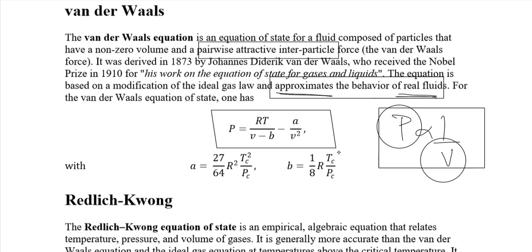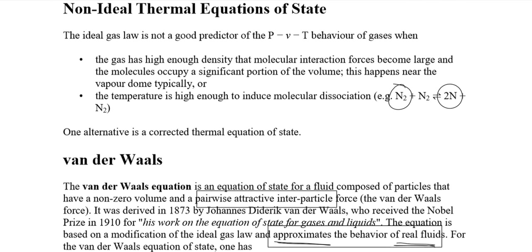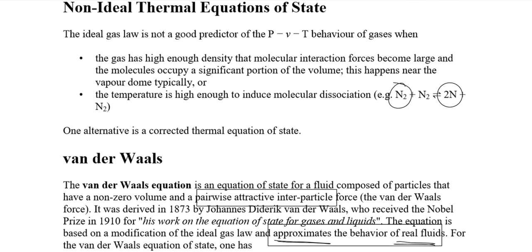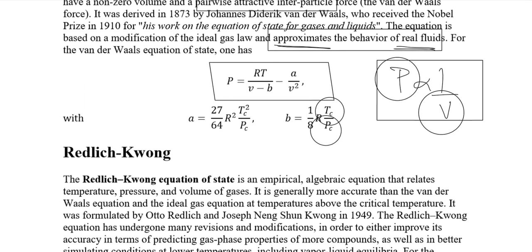In this equation we have T_c and P_c — the critical temperature and critical pressure. So near the vapor dome, or near the critical point, we are talking about non-ideal behavior. The Van der Waals equation can approximate the behavior of real gases near the vapor dome or near the critical point.